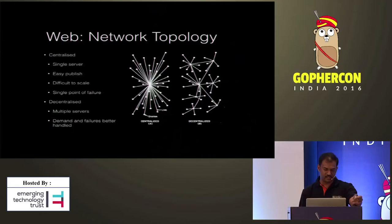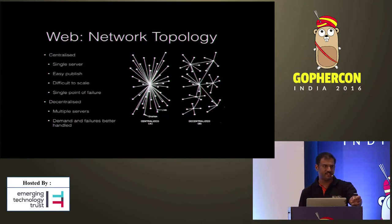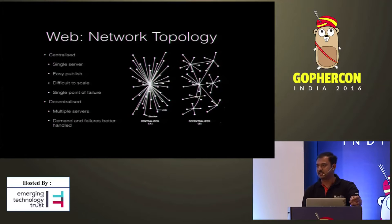I'll start with network topology, as network topology impacts the reliability and robustness of the network. Here you can see a diagram of two different networks — centralized and decentralized. In a centralized network, all clients connect to a centralized server, and they pull and push content from and to that server. In this setup, it is easy to publish and update content, but it is really difficult to scale up the network when more clients join. There is also a single point of failure.